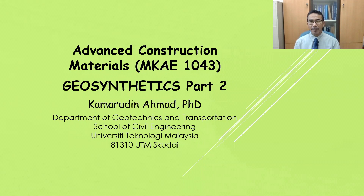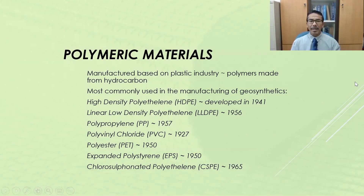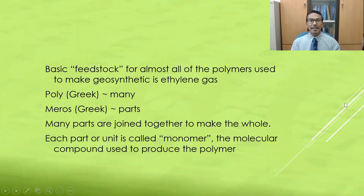Principally, Geosynthetics are produced based on the plastic industry using polymeric materials originated from hydrocarbons. Some examples of commonly used polymeric materials in manufacturing Geosynthetics are high density polyethylene (HDPE), linear low density polyethylene (LLDPE), polypropylene, polyvinyl chloride (PVC), polyester and so on. The basic feedstock to produce these polymers to make Geosynthetics is ethylene gas.